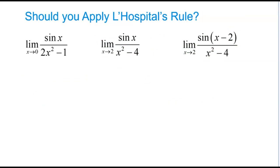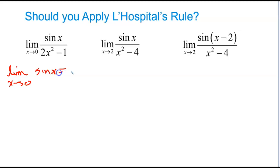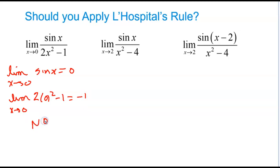Let's just determine whether or not L'Hôpital's rule would apply in these three cases — we're not asked to evaluate the limit, just determine whether it applies. First example: the limit as x approaches 0 of the numerator gives sine(0) which is 0, and the limit as x approaches 0 of the denominator equals negative 1. So L'Hôpital's rule does not apply for this one.